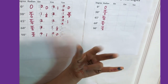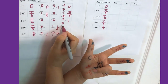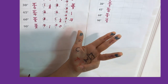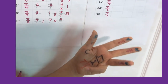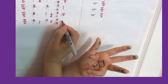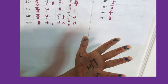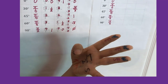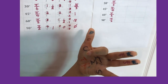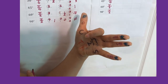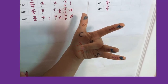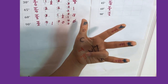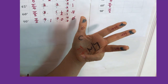Tangent 60: there are 3 fingers above, so square root of 3 over square root of 1, which means square root of 3. Tangent 90: you have 4 fingers above, but the denominator is 0, so tangent 90 is undefined. Let's do tangent one more time: tan0=0, tan30=√3/3, tan45=1, tan60=√3, tan90=undefined.